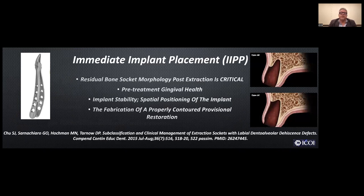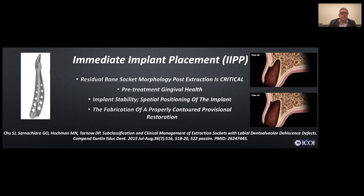An article by Dr. Chu classifies the socket left after extraction. In some cases — large fenestrations at the top or down to the apex — we cannot do an immediate implant and need to graft. Use caution with forceps in these situations, as you can break the thin buccal bone. A BenX extractor kit is very useful for atraumatic extraction. We sound the bony architecture and verify that all four walls are present before proceeding.